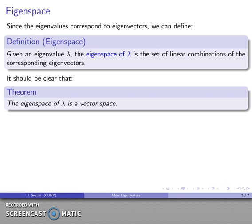And it should actually be fairly easy to verify that the eigenspace is in fact a vector space. And we can go through our checklist of what we need for a vector space and see that the eigenspace does actually fit all of those requirements.